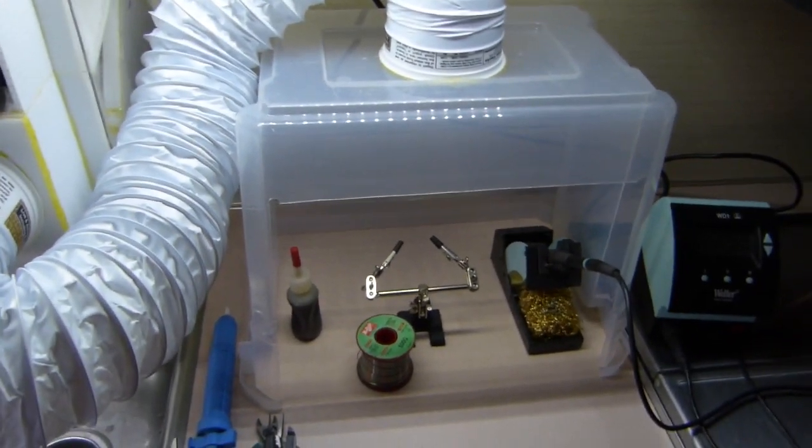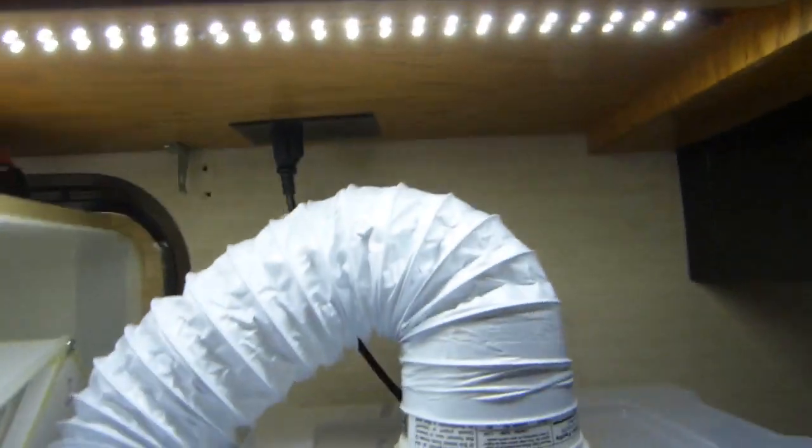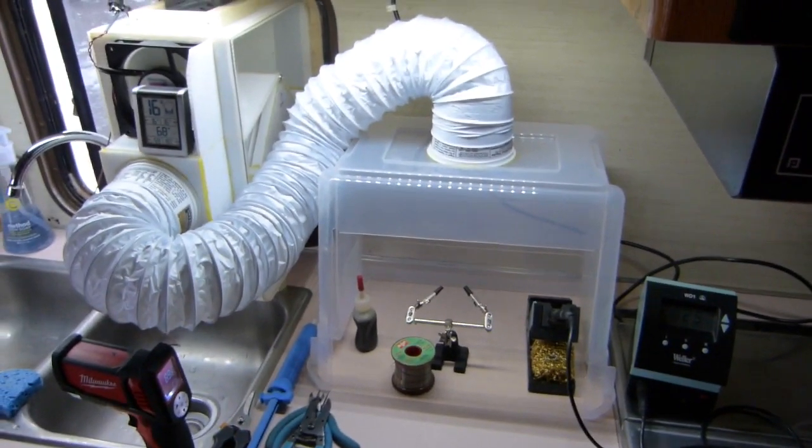So you could have lighting inside the hood, which is what I'm going to wind up doing. Because I'm going to get some more powerful versions of these strip lights. So there you have it. A solder fume extractor with a heat recovery ventilator.